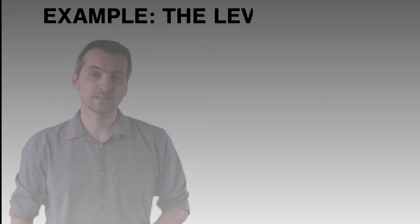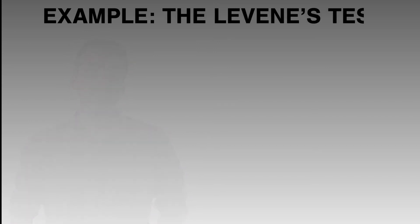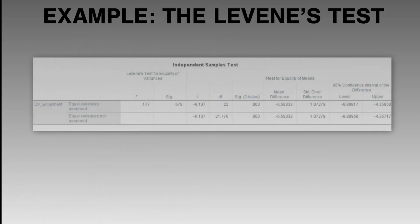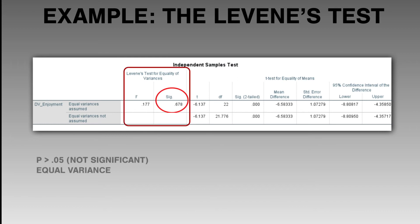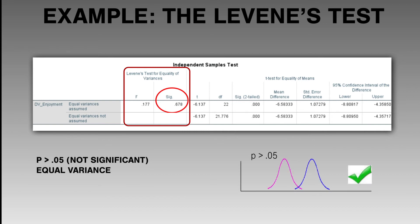Levene's test usually appears alongside the parametric test output — for example, the t-test table. Focusing on Levene's test, if the significance value is 0.678, the p-value is more than 0.05 and is not significant. In this case, the assumption of equal variance has been met.